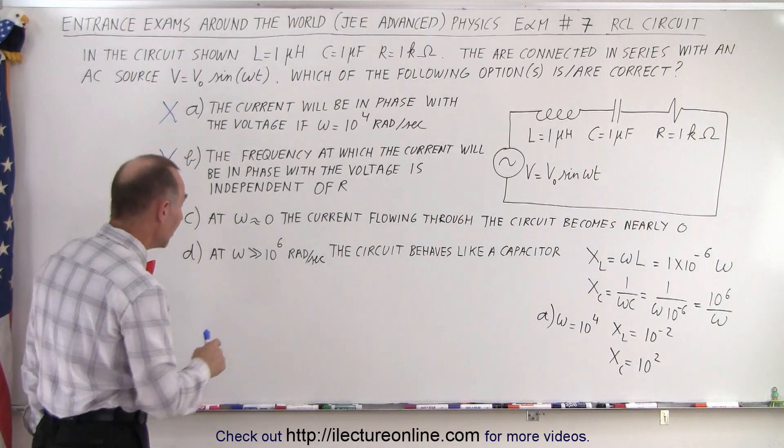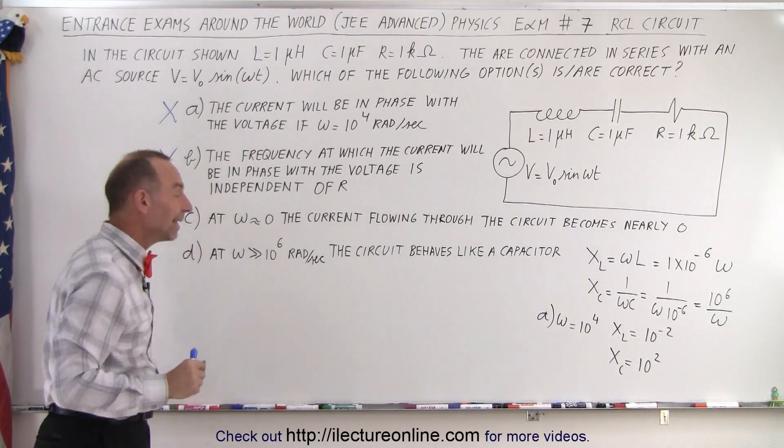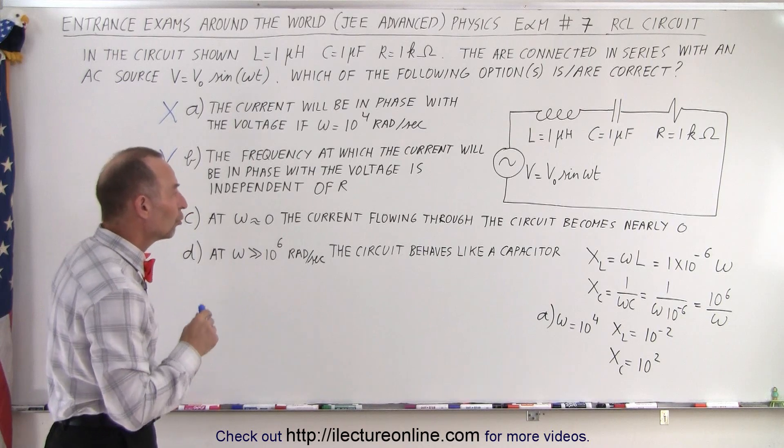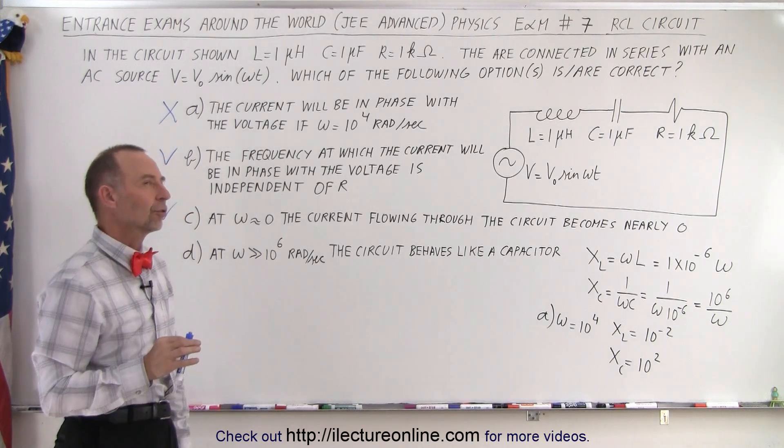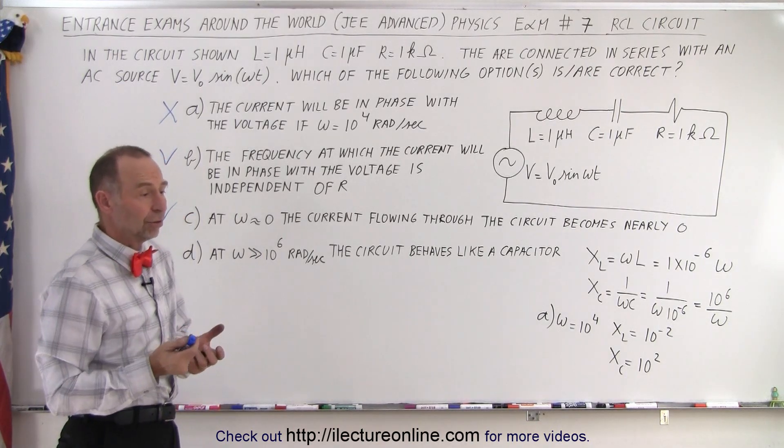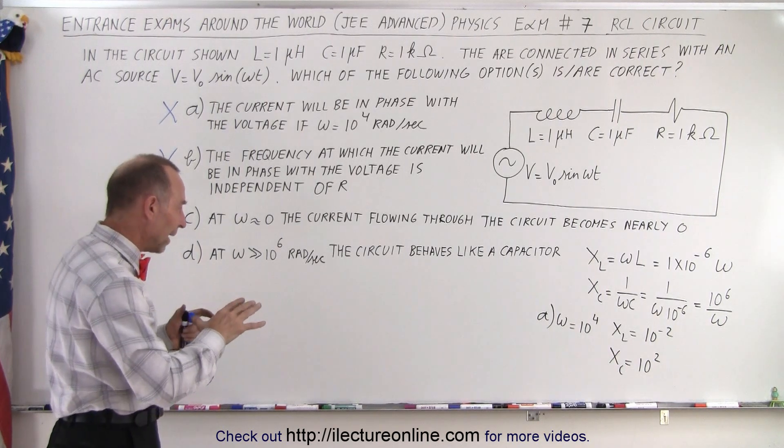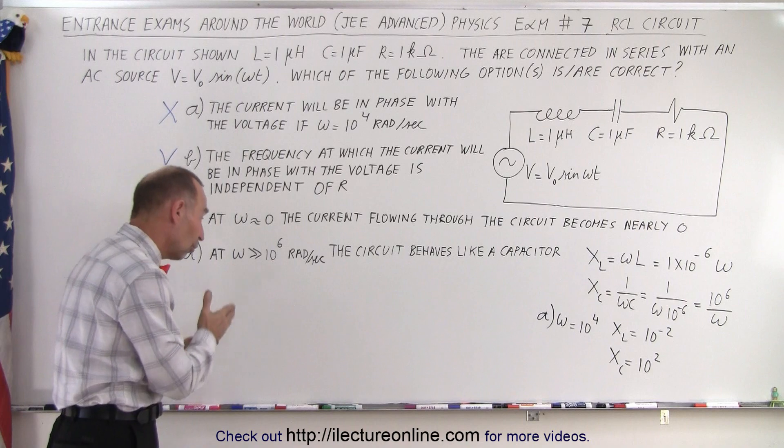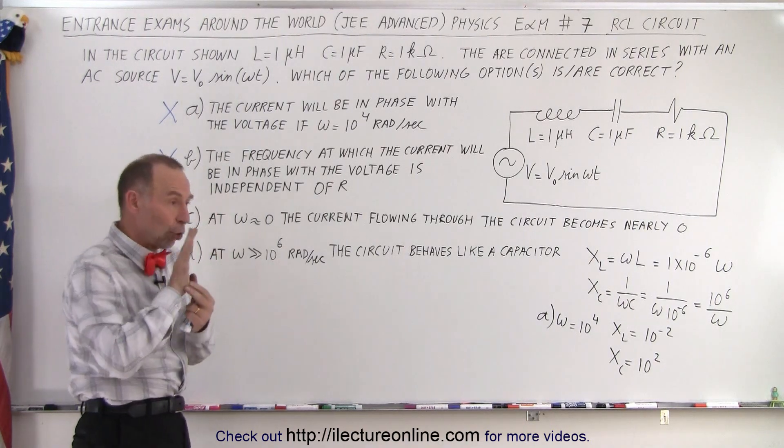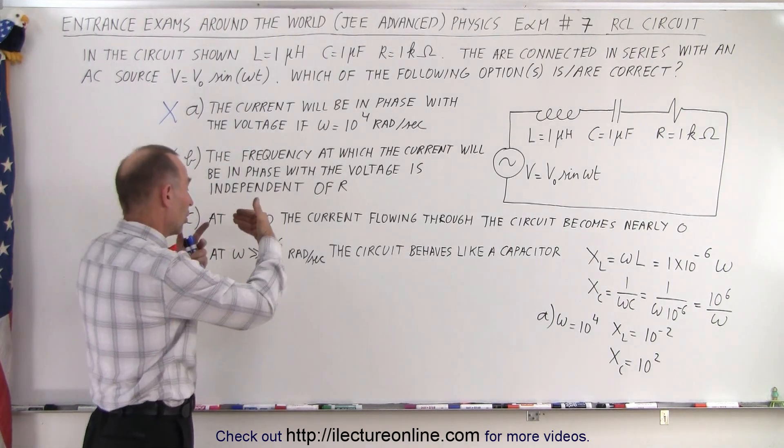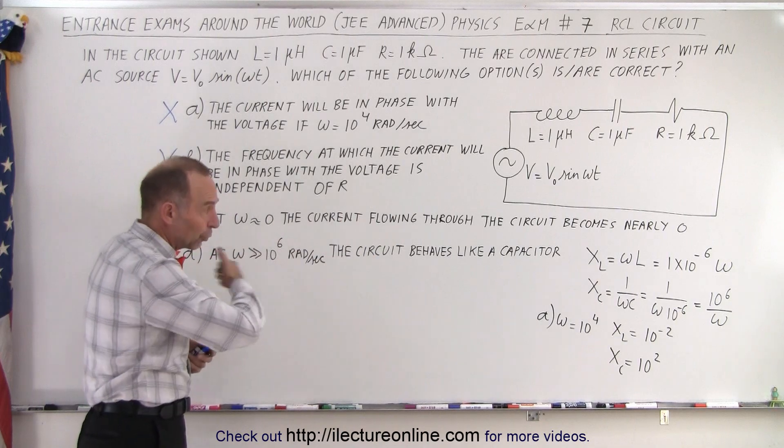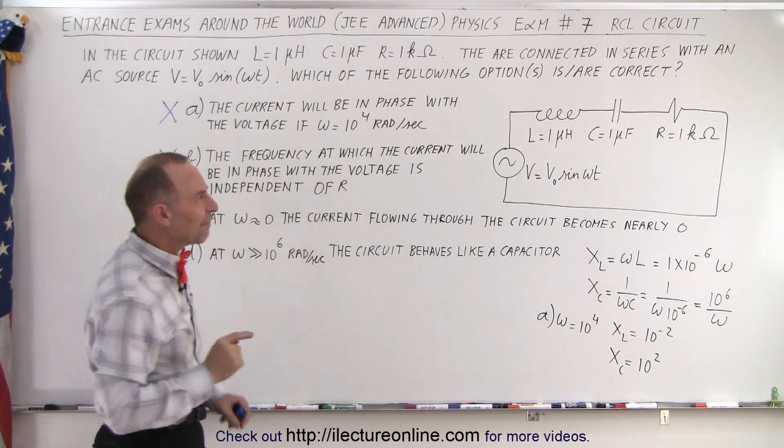Finally, statement D: at omega much larger than 10^6 radians per second, the circuit behaves like a capacitor. Now, a capacitor opposes current when omega is very low and holds back the current. If omega is large, the current will go through the capacitor, but we still have an inductor.